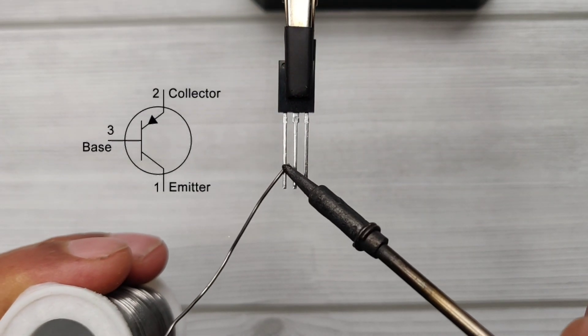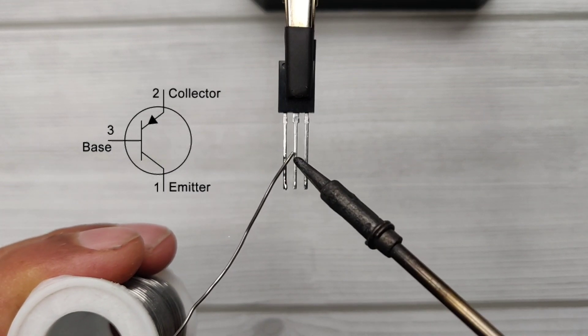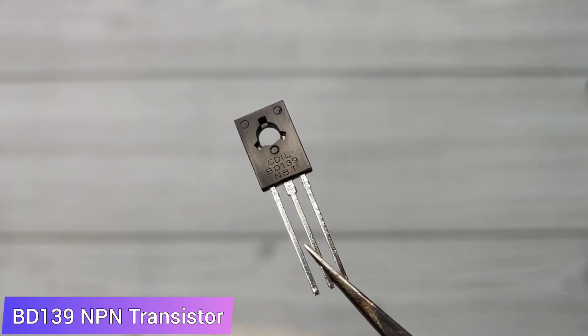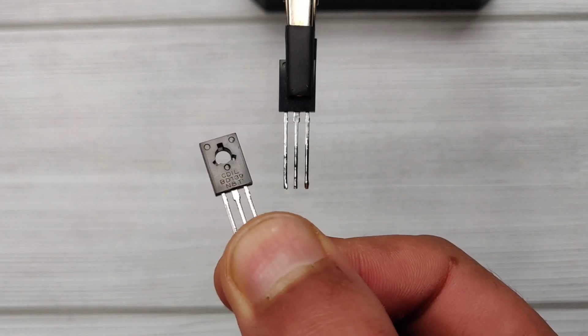Pin 1 is emitter, pin 2 is collector, pin 3 is base. Take another BD139 transistor.